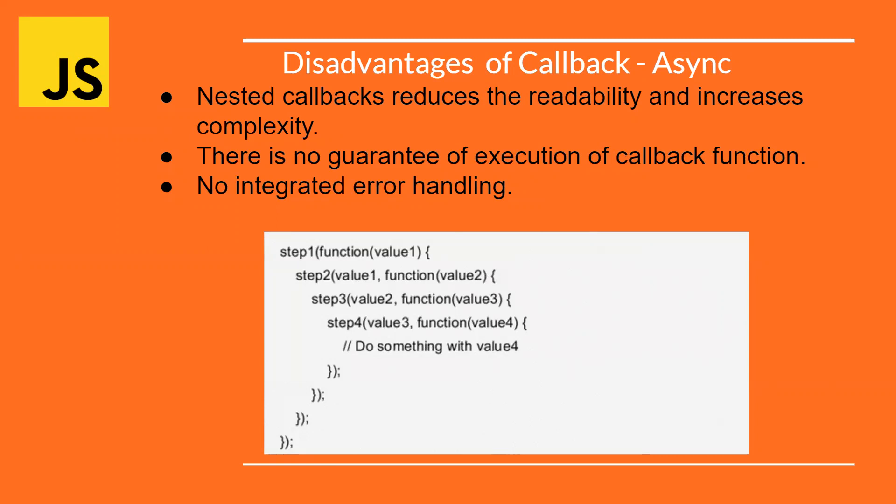Due to these issues, we are switching to promises. For example, step one has a callback function. Once the task has been completed, the callback function is called with the value produced. It will have its own callback function internally in step two. This keeps on continuing, resulting in callback hell. And here you can clearly see that if any error happens, you are not handling it in this code. These drawbacks will be overcome inside promises.